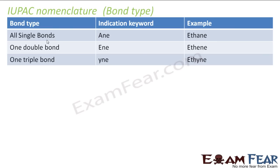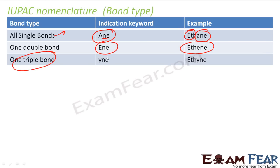Then you find the bond type. If it has all single bonds, use the suffix 'ane' — for example, methane, ethane, propane, butane. If it has one double bond, use 'ene' — ethene, propene, butene, pentene. If it has one triple bond, use 'yne' — ethyne, butyne, pentyne, decyne. So you are merging two things: the prefix from the number of carbon atoms, and the suffix from the bond type.